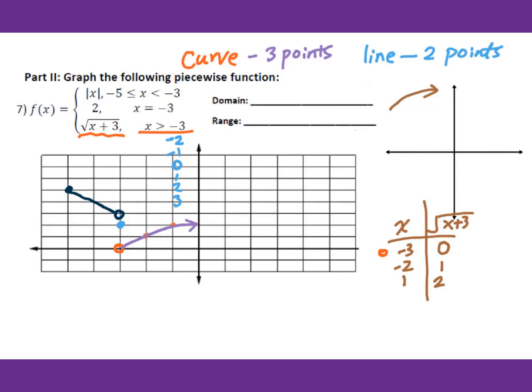Now we finish graphing this piecewise function. The domain: the very left point is negative 5, and there's no right endpoint, so it goes to infinity. For the range: the very bottom point is 0, and there's no top endpoint, so the range goes to infinity as well, since the curve keeps going forever.